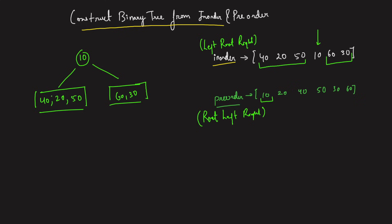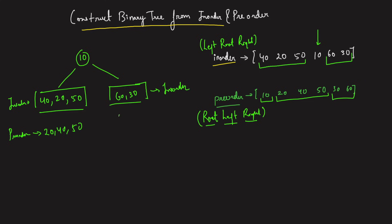Coming to the left, since I know the left will have those three nodes, what is their in-order? The in-order will be 40, 20, 50. What will be the pre-order? If the left sub-tree contains three nodes and pre-order is root, left, right, the moment you go to the left you again start with root. So the first three elements of the pre-order will be the pre-order traversal for the left sub-tree — that's 20, 40, 50. Similarly for the right, the remaining in-order elements form the right's in-order, and the remaining pre-order elements form the right's pre-order.